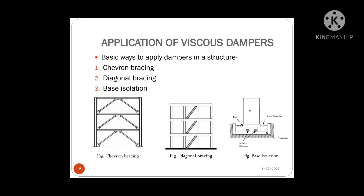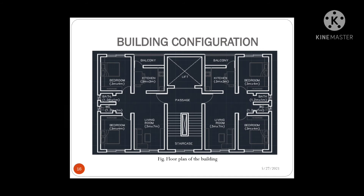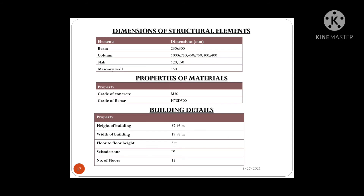Regarding the building that we have designed, the building plan is drawn in AutoCAD and it is a 12-storey RCC residential building with two BHK flats on each storey. The column sizes used are 1000x750 mm, 450x750 mm, and 300x400 mm. The beam size is 230x300 mm. We have used slabs of 150 mm and 120 mm thickness and considered 150 mm thick masonry walls. We have used concrete of grade M30 and rebar of Fe500. The building is 39.75 m high, 17.3 m wide, and the floor-to-floor height is 3 m.